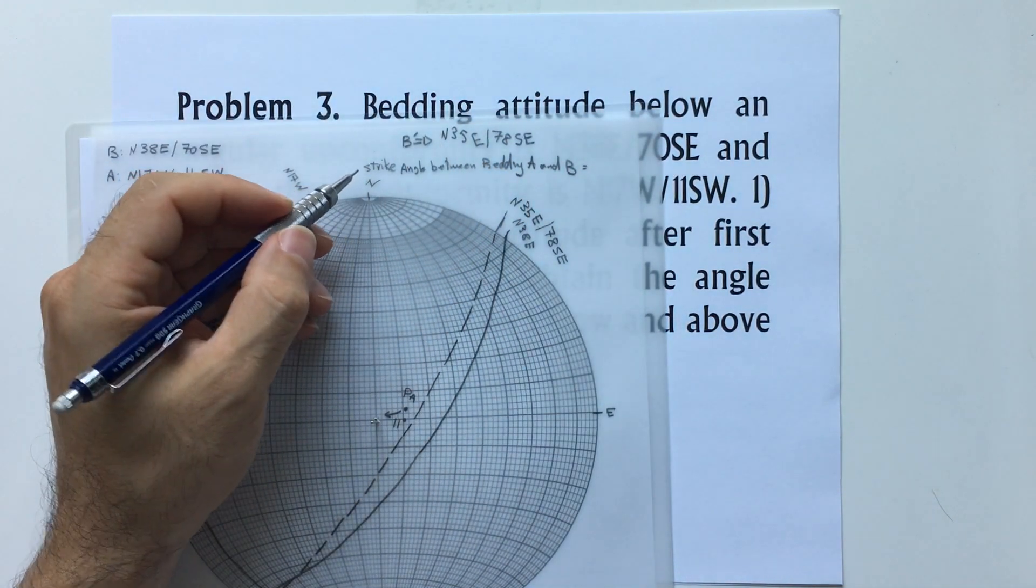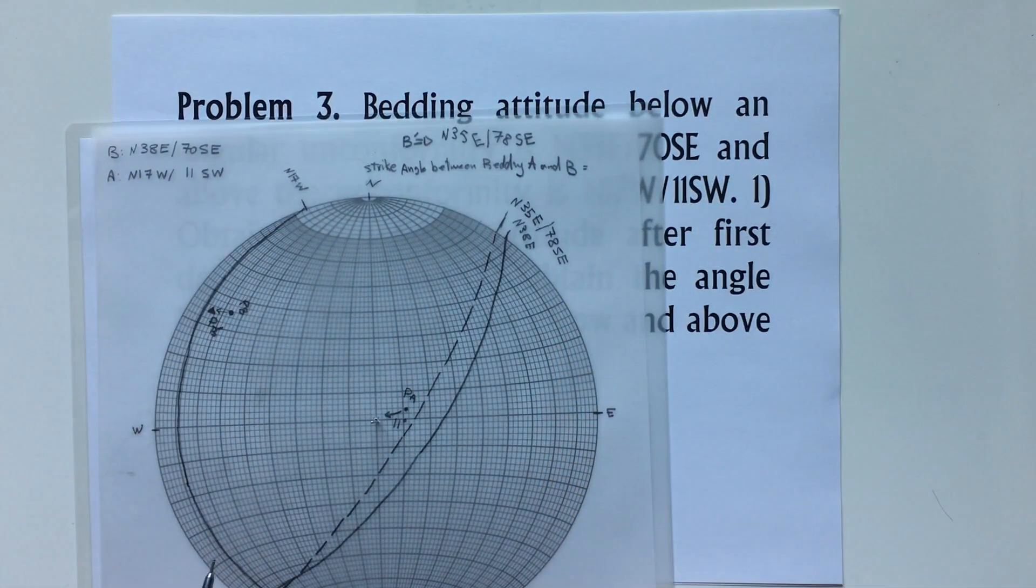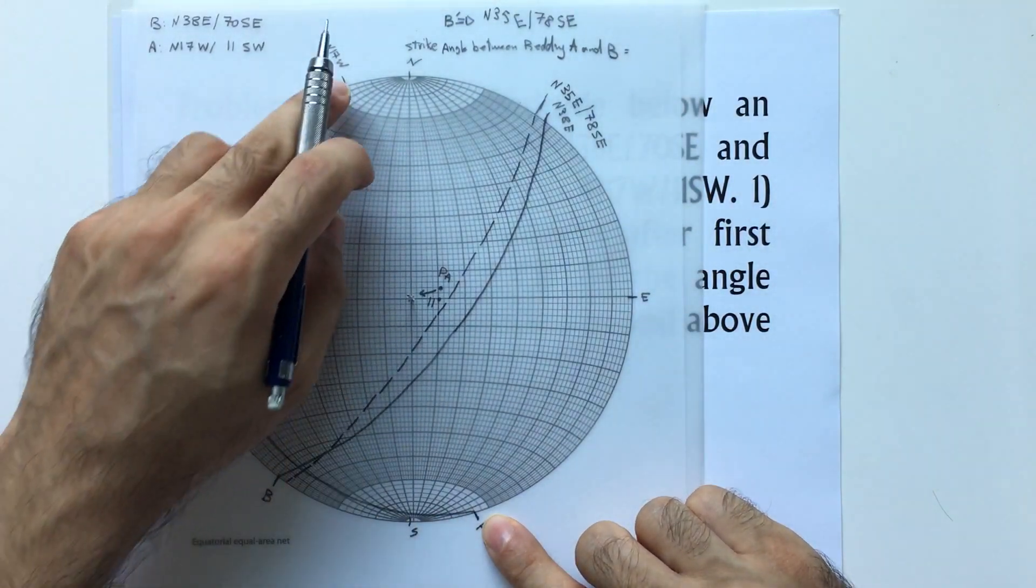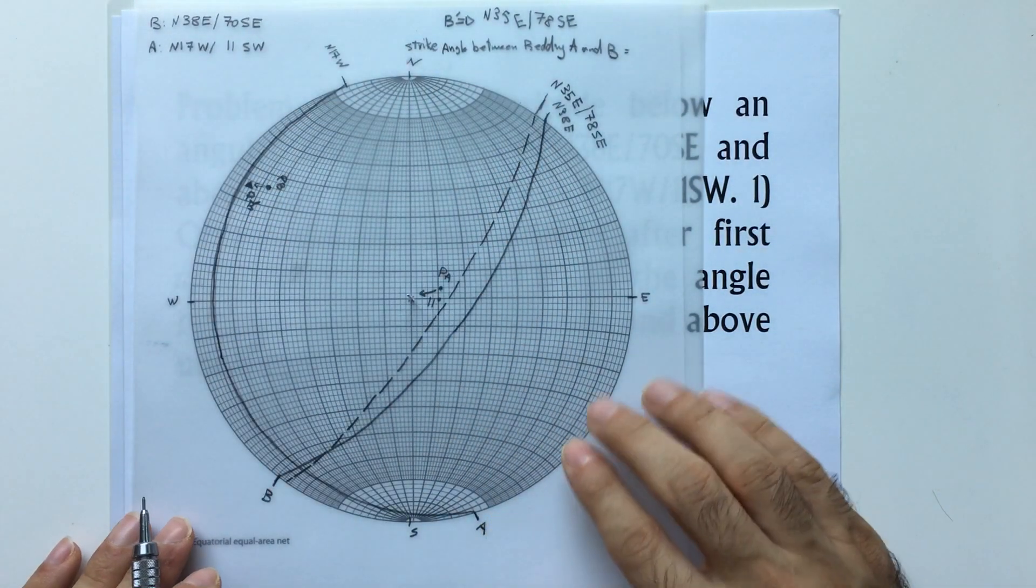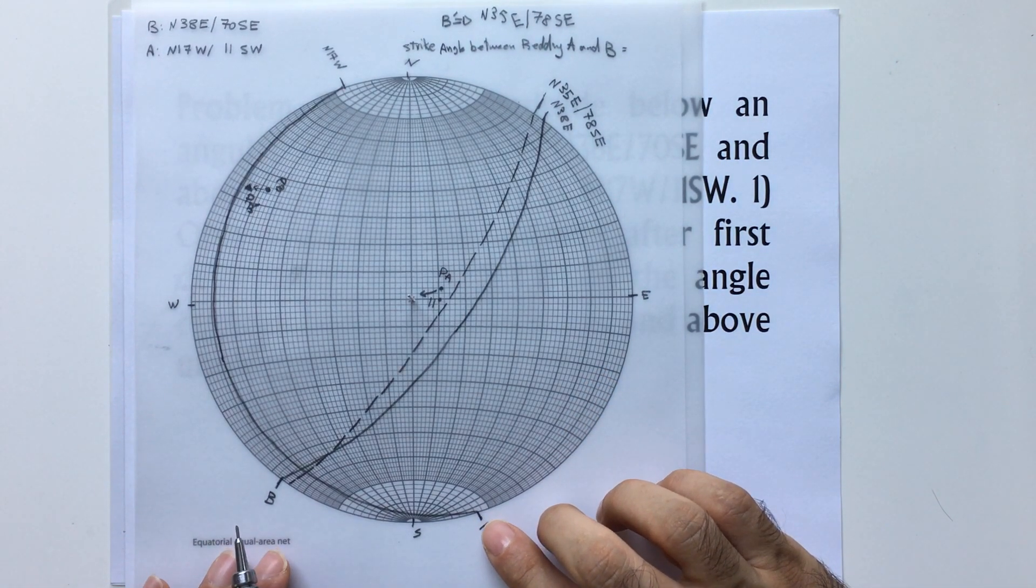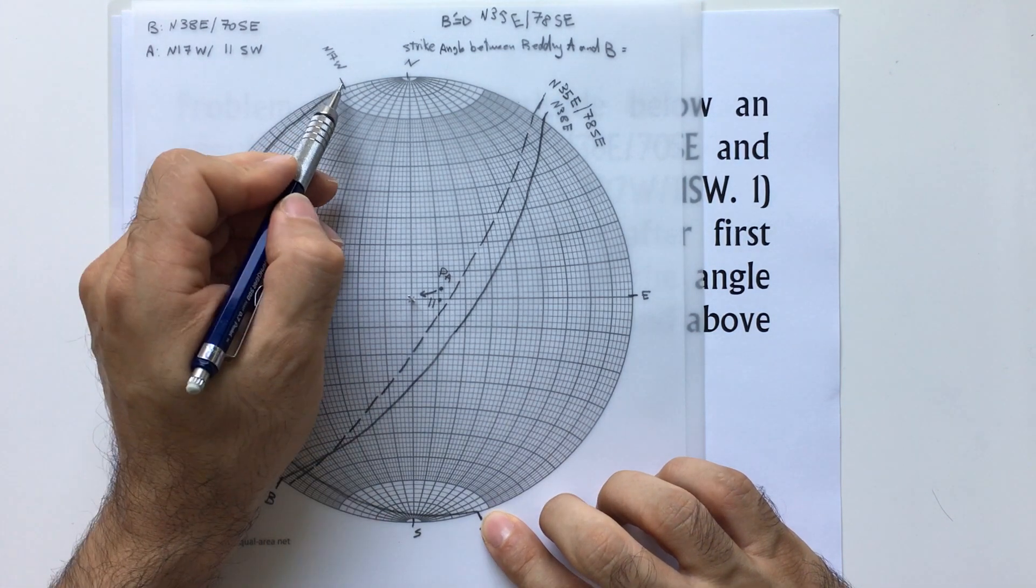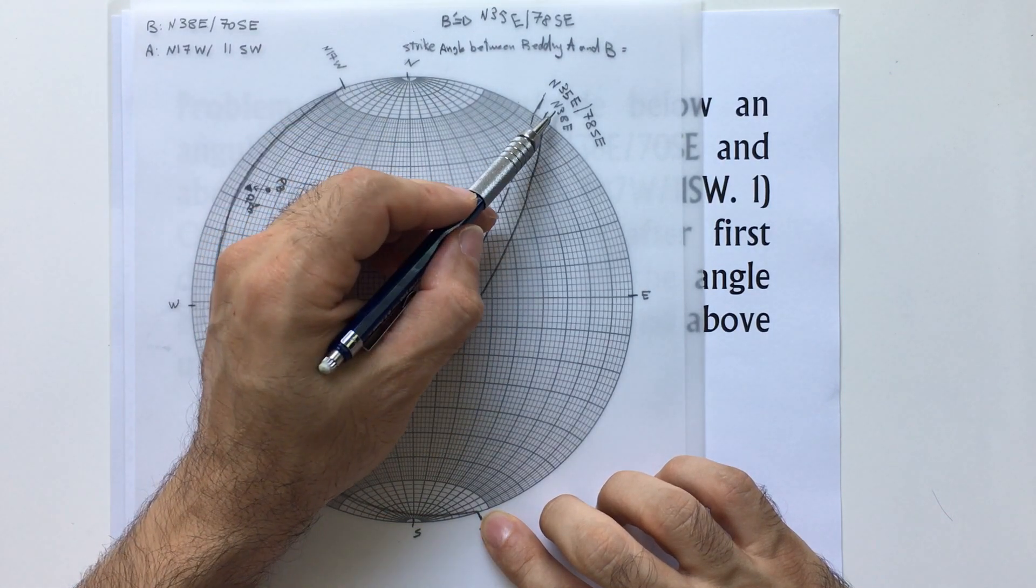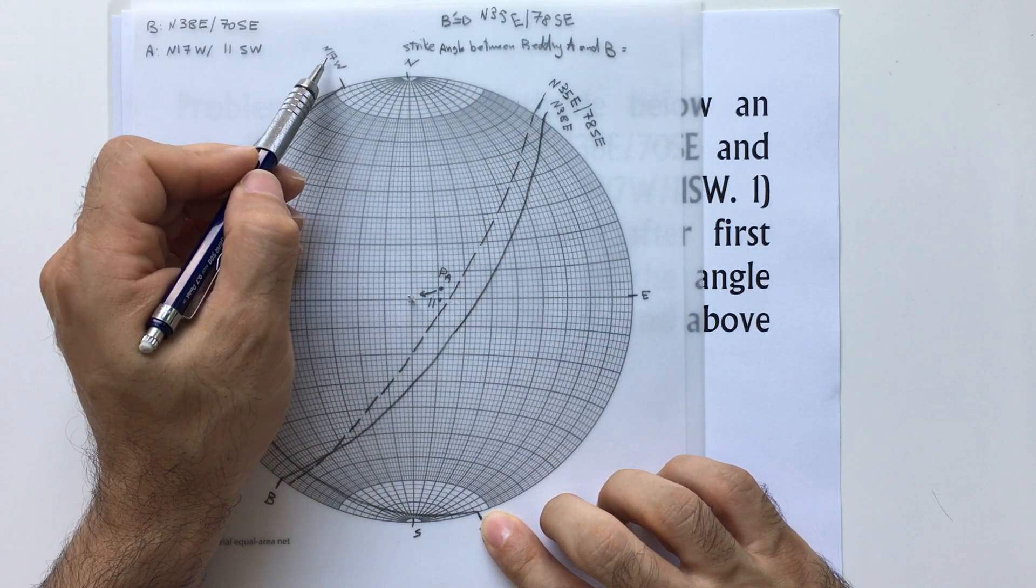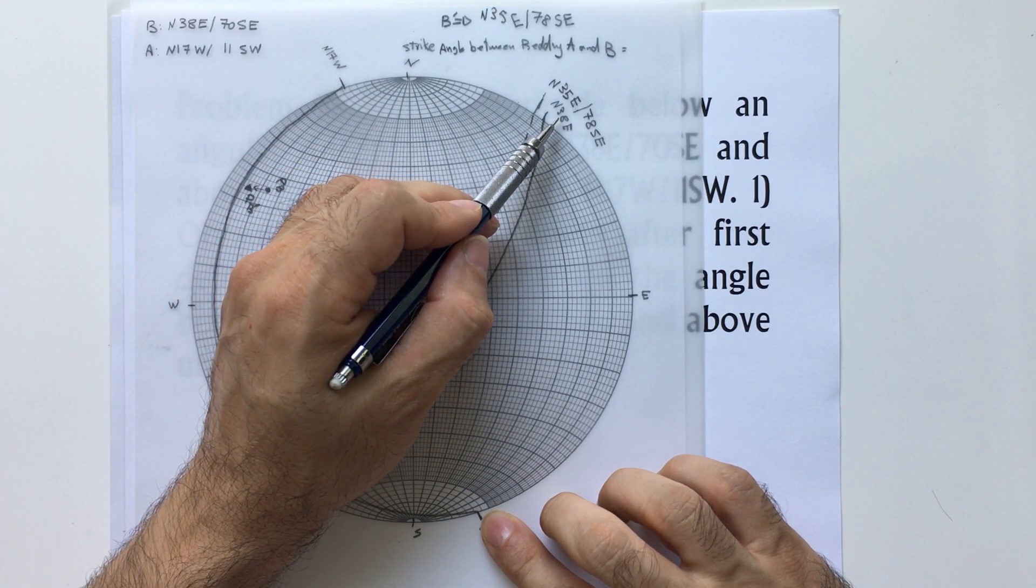The second part: what's the strike angle between the bedding A and B? This is my A and B. Either you can count from here or from here, it doesn't matter. And I'm going to count along the primitive circle. This is 17, we know this is 17, we know this is 38, and the angle between them is the sum of 17 and 38. It's going to be 55 degrees.